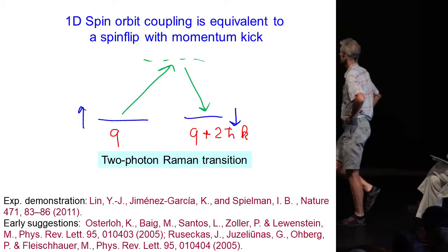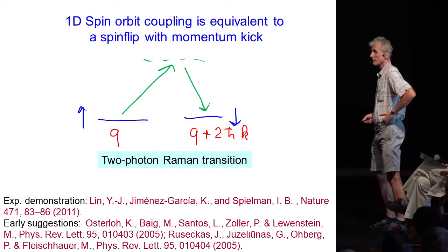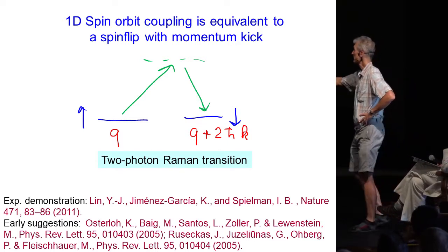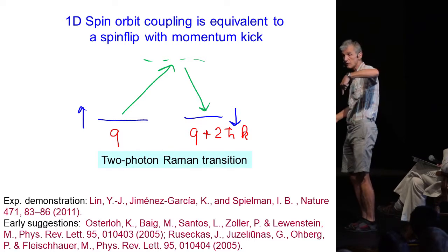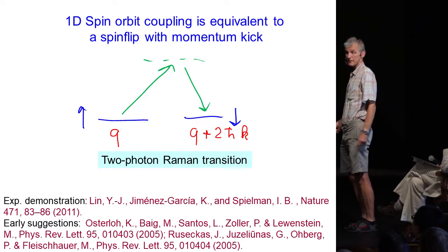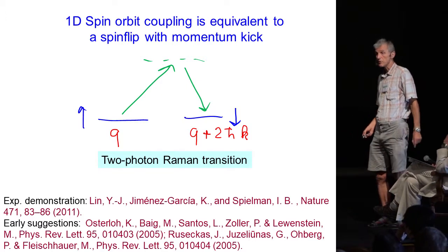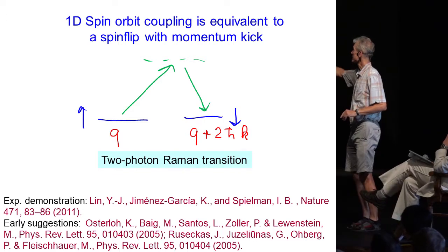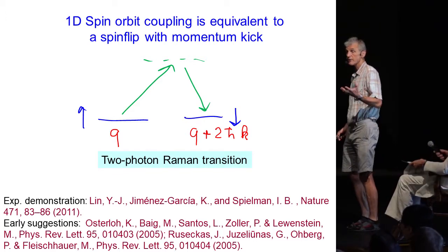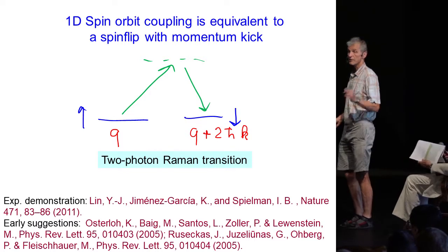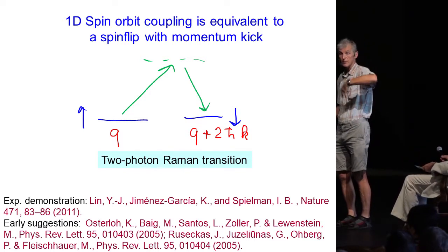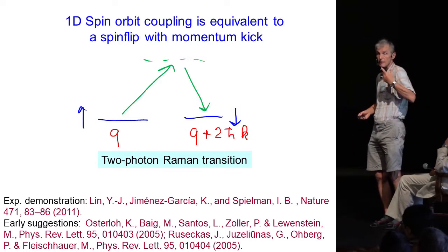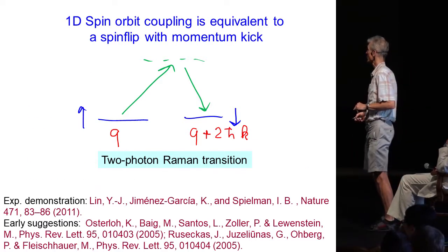Spin-orbit coupling is in its most basic form as one-dimensional spin-orbit coupling couples spin, a spin flip with momentum transfer and therefore can be implemented with the tools of atomic physics as a two-photon Raman transition. A two-photon Raman transition which flips the spin and transfers momentum, couples spin and orbit and is a one-dimensional form of spin-orbit coupling.